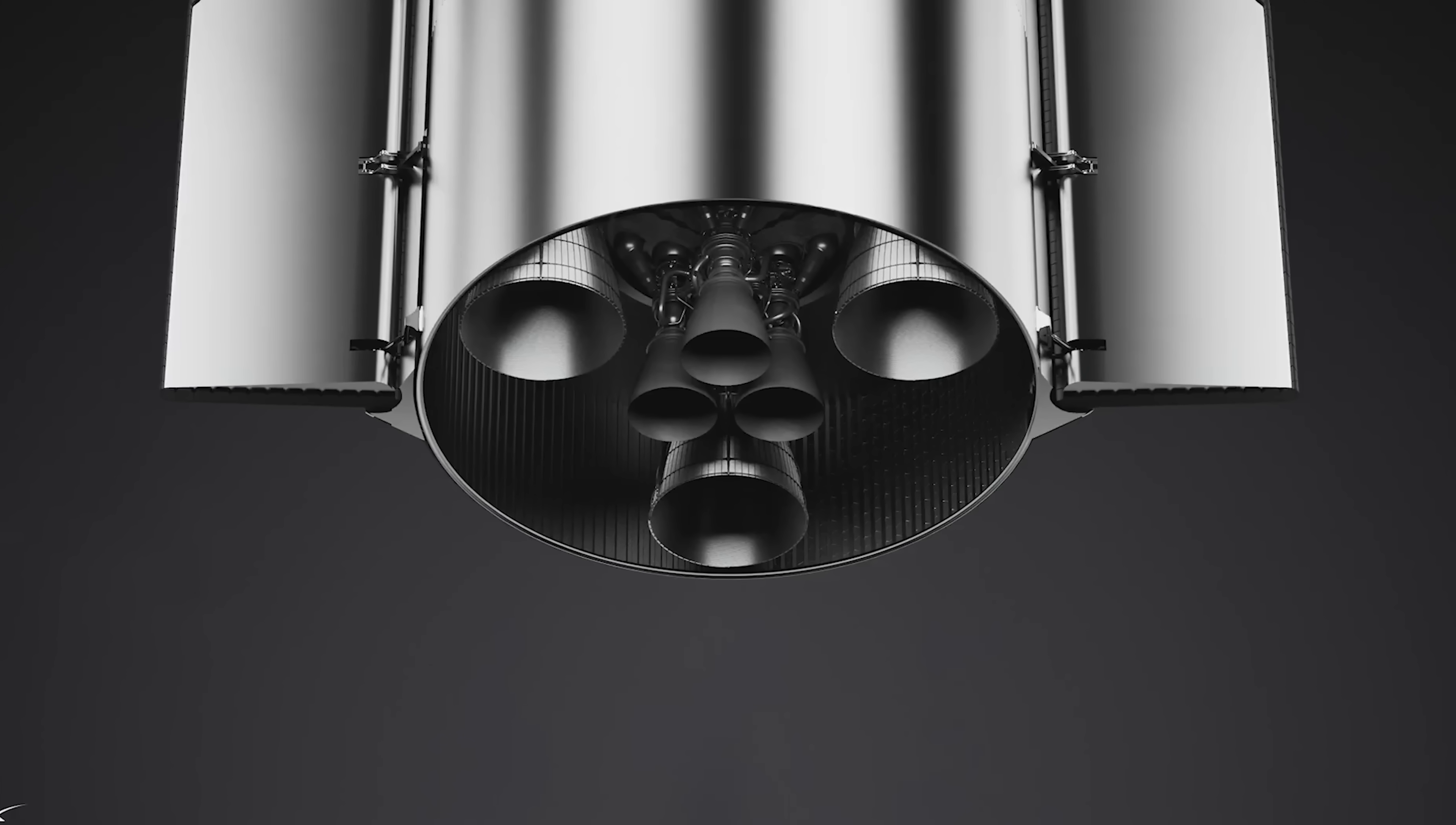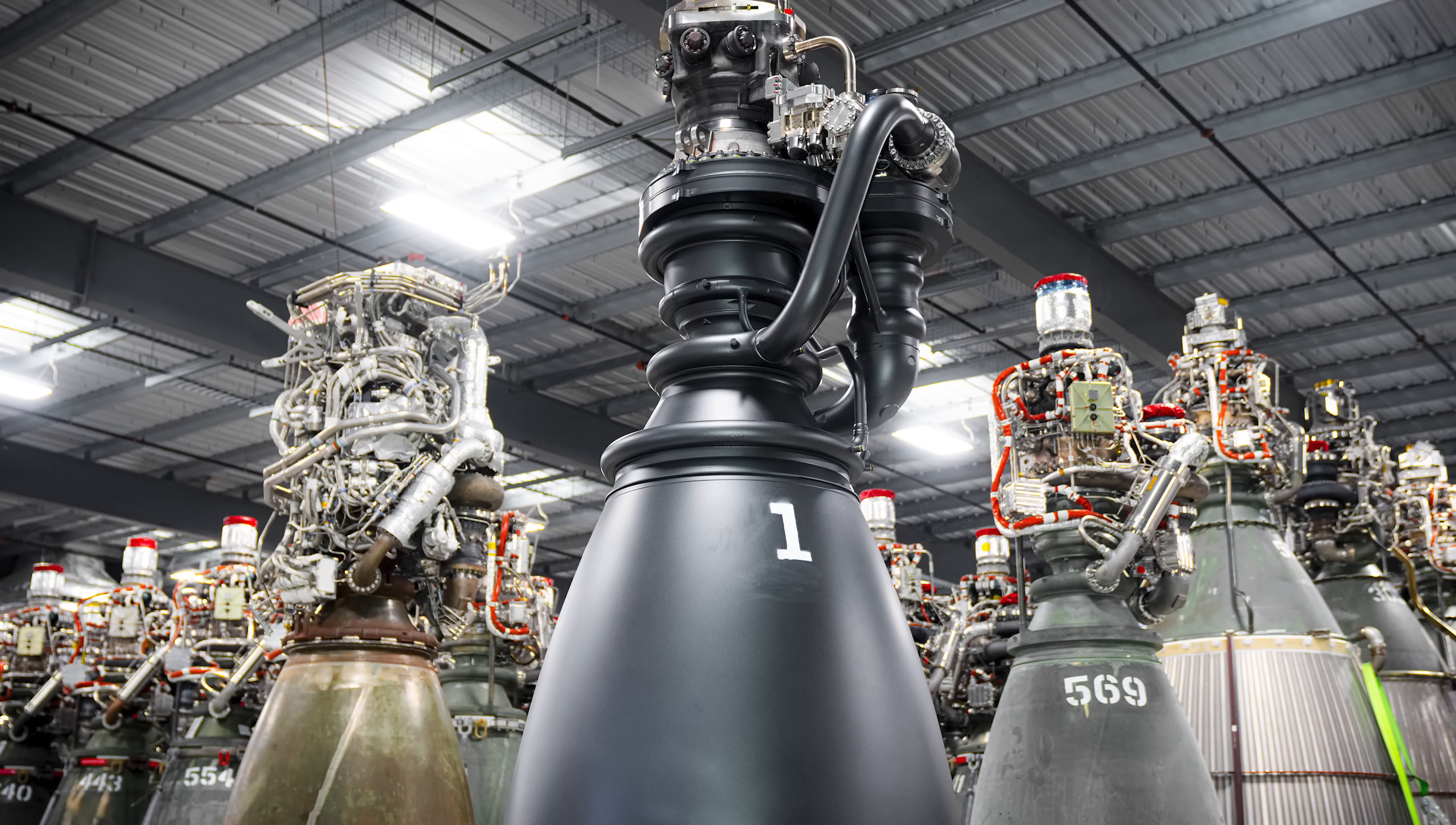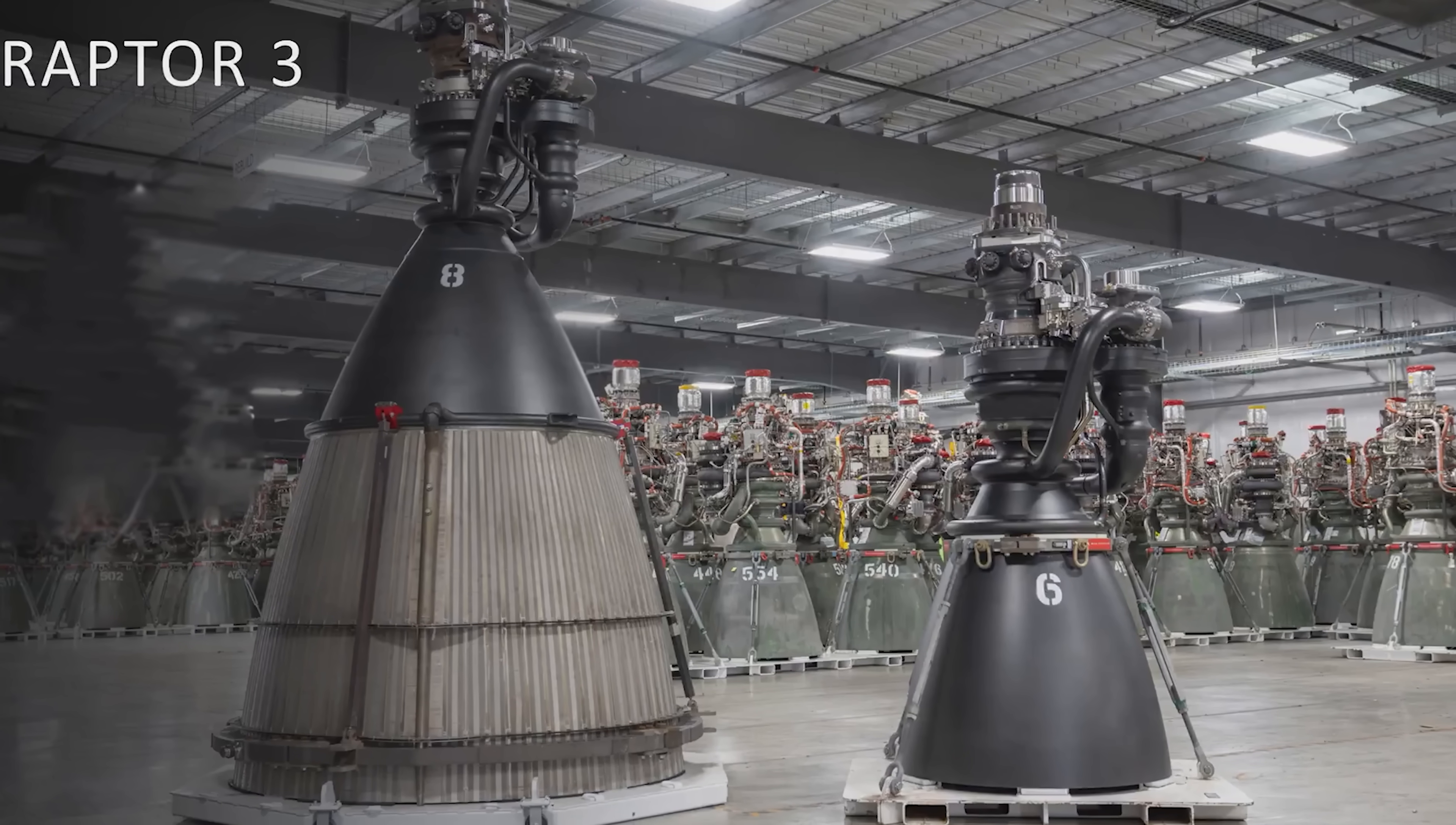The upper stage will also be powered by the new Raptor 3 engines. This upgrade addresses several major issues experienced with Block II, particularly serious propellant leaks that contributed to recent test failures. Raptor 3 eliminates the need for traditional heat shielding around the engine area, reducing weight and improving reliability. For example, in the event of a minor fuel leak, Raptor 3 is designed to simply let the leaking fuel burn off in the surrounding plasma during flight. This poses minimal risk. In contrast, with enclosed engine compartments, even small leaks can quickly become dangerous. This open and robust design makes the propulsion system more fault-tolerant and safer during operation.